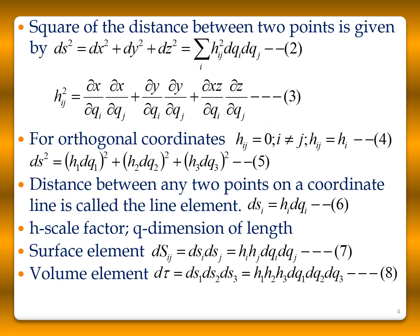The square of the distance between any two points is given by ds² = dx² + dy² + dz². Using the expressions for dx, dy, and dz derived previously, and squaring, we get ds² = Σ hij² dqi dqj, where hij² = (∂x/∂qi)(∂x/∂qj) + (∂y/∂qi)(∂y/∂qj) + (∂z/∂qi)(∂z/∂qj). For orthogonal coordinates, when i ≠ j, hij = 0.